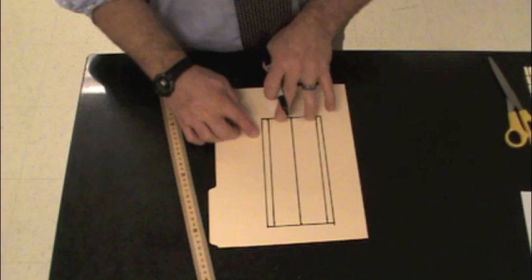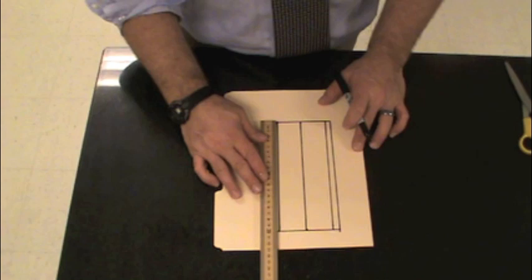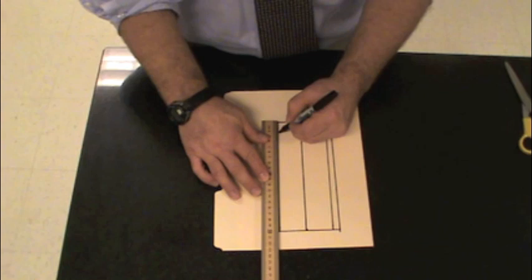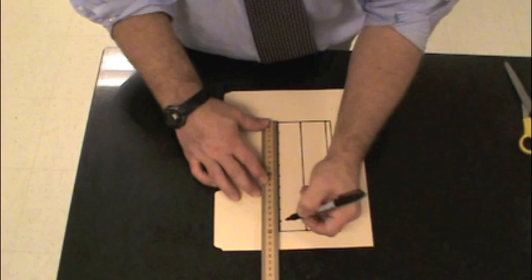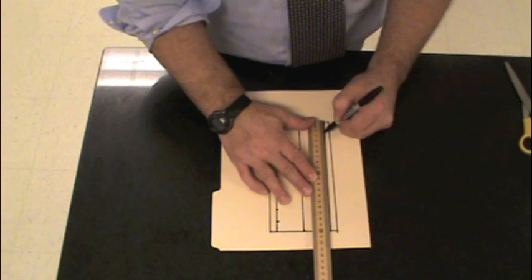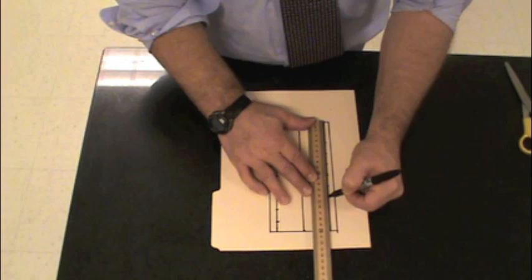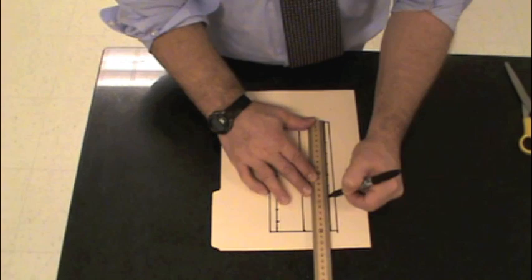Now once we've got done with that, every two centimeters, here's one, here's two, I'm going to make a line. So each of our bases is going to be 2 centimeters wide. And I go all the way up to 20, and I'm going to do that on the other side. Now once we've got that done, we're going to go ahead and draw lines in between each one.